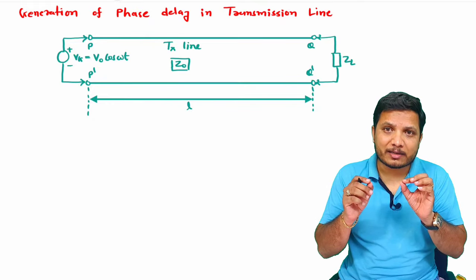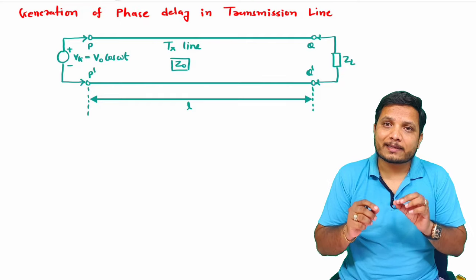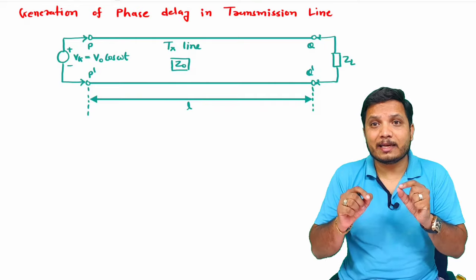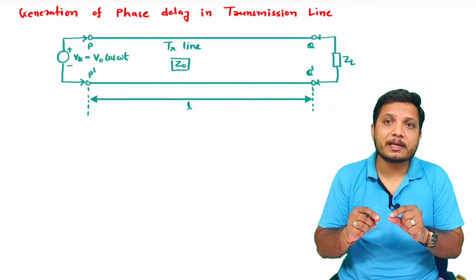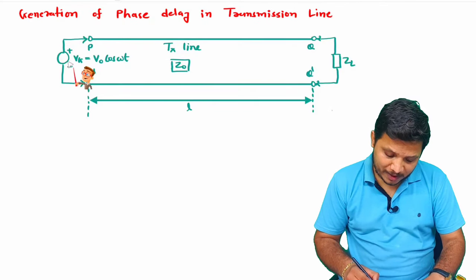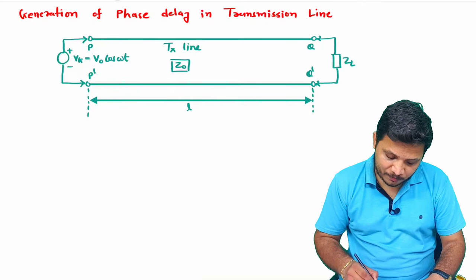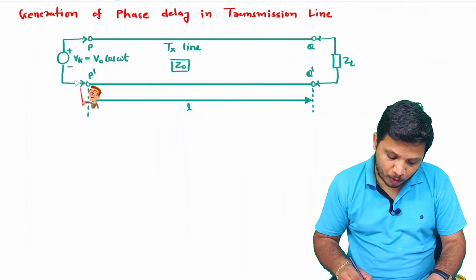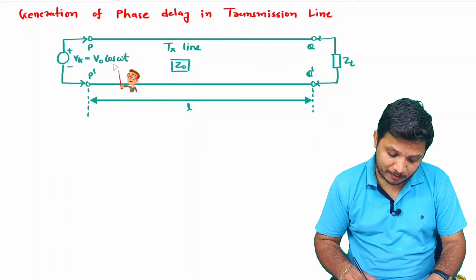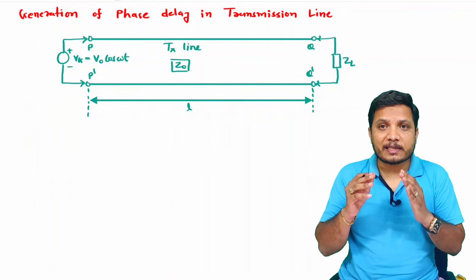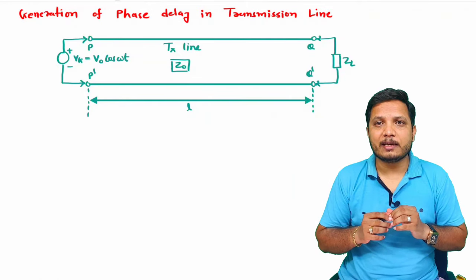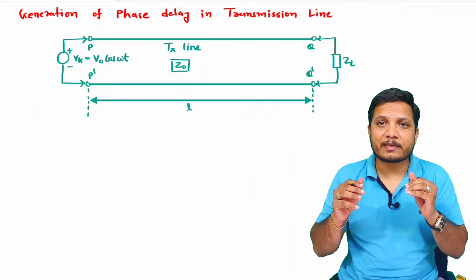Before explaining signal propagation, one must know that when you connect a supply to a transmission line, it is very compulsory to have impedance matching of the source with the transmission line. For simplicity, I'm assuming the source has been designed with 100% accuracy and there is 100% impedance matching.